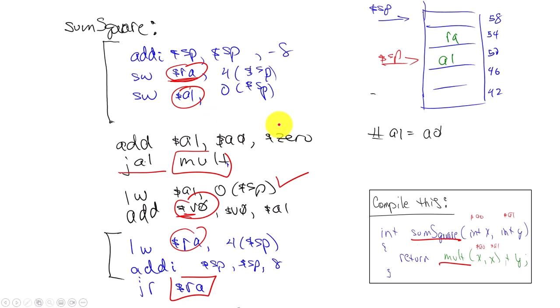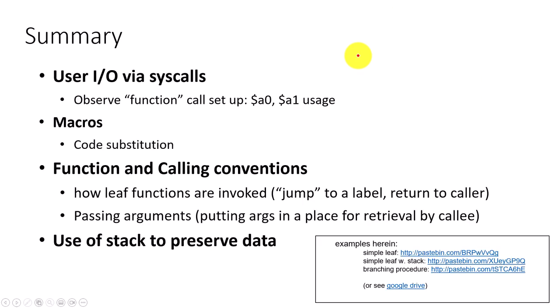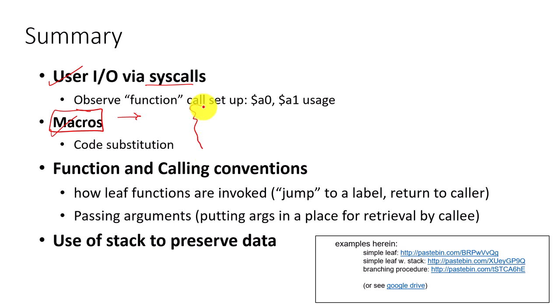At this point, we've completed discussion on syscalls, macros — which are an alternative to functions that make code appear concise by expanding one line into multiple lines, avoiding the function call penalty — and function calling conventions. More importantly, we covered how a stack is used in those conventions.